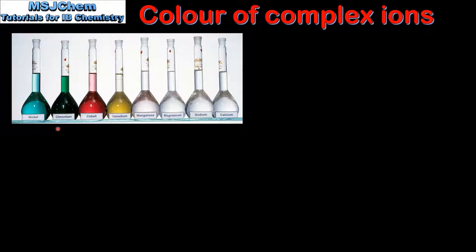For example, the solution of chromium ions appears green and the solution of cobalt ions appears red. On the right we have solutions of magnesium ions, sodium ions and calcium ions. We can see that these solutions are colourless because they are not transition elements.